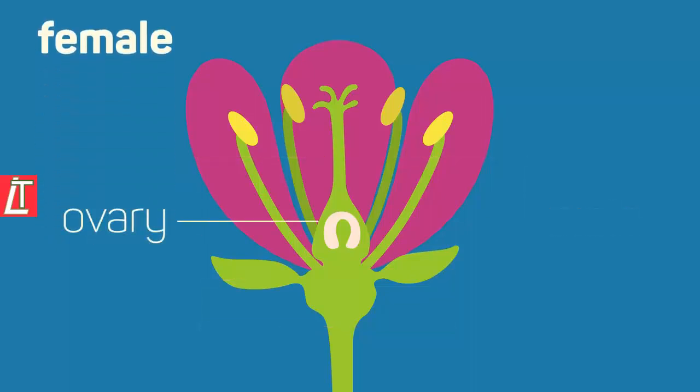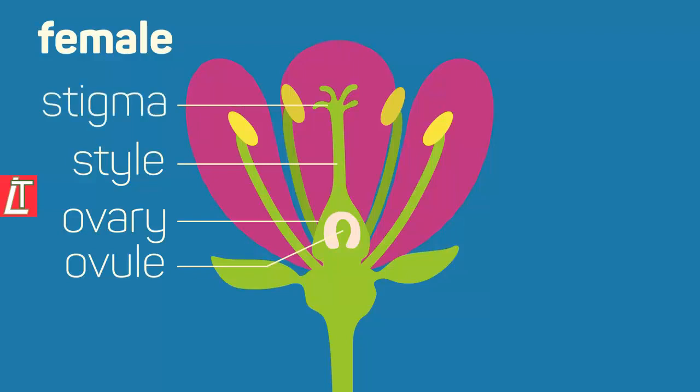The ovary develops into the fruit if the plant is pollinated. Inside the ovary are ovules which become seeds. The style connects the ovary to the stigma. The stigma usually has a sticky substance so the pollen a pollinator is carrying gets deposited there.